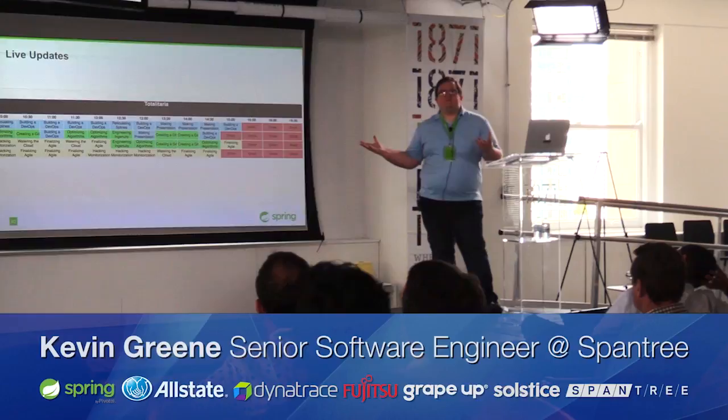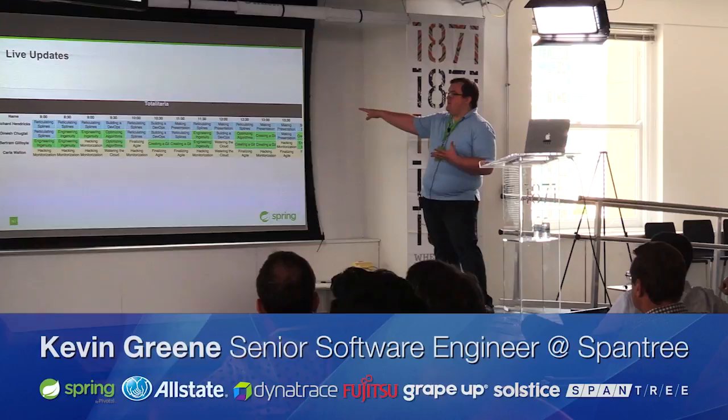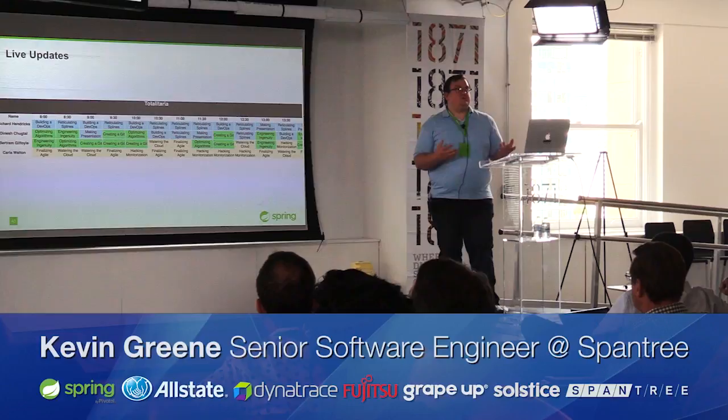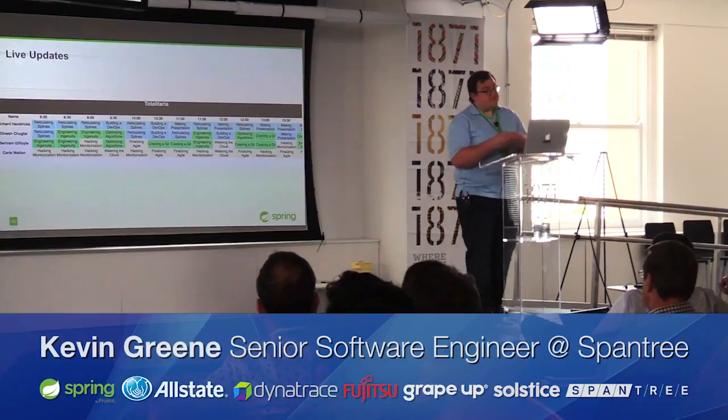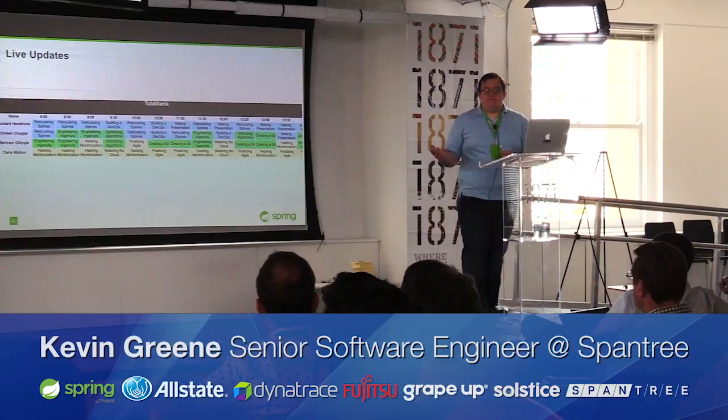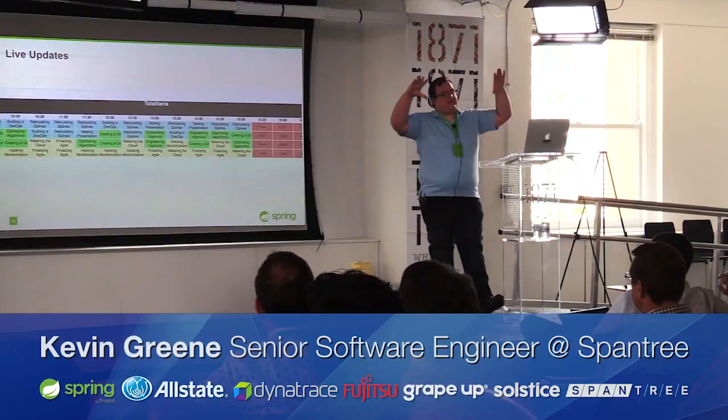Now we have a complete solution where we can dictate exactly what people should be doing in real enough time. Throw this on a big dashboard overlooking everyone's desks, maybe angled to get that oppressive feel, and Totalitaria is in business. As for what's next, we could add computer monitoring, bathroom door alarms, and constant re-evaluation of estimates. With Spring Cloud Dataflow, it's not too hard to get push notifications to your employee's phone so they know exactly what they should be doing.